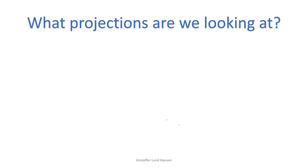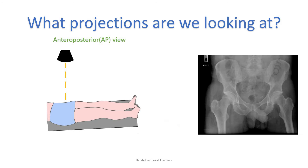So which projections are relevant? We have two main ones: the anteroposterior one and the lateral or frog leg view. The anteroposterior one is the one you will most often look at. It takes a picture of the whole pelvis from just above the iliac crest to the first one-third of the femur. The patient lies down with the legs straight, and to get a proper picture it is important that the feet are rotated slightly inwards about 15 degrees.